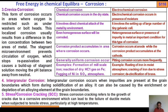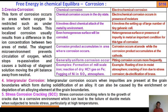Number four is intergranular corrosion, which occurs when impurities are present at grain boundaries that form during solidification of an alloy. It can also be caused by enrichment or depletion of alloy elements at grain boundaries. That is intergranular corrosion.